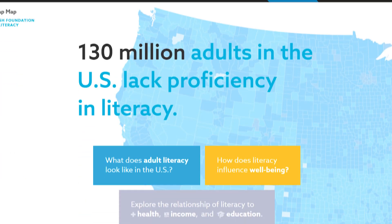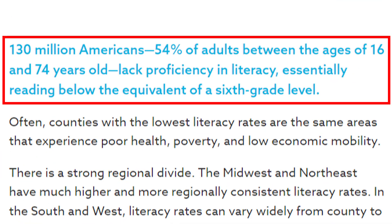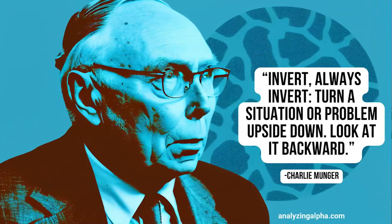The second thing in the editorial guideline is reading level. 130 million Americans — that is 54 percent of adults between the age of 16 and 74 — lack literacy proficiency, actually reading below the equivalent of a sixth-grade level. Unless you are writing on a complex topic or targeting technical people, try not to exceed a sixth or seventh grade reading level. This technique alone can help you make your articles sound better.